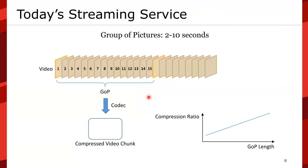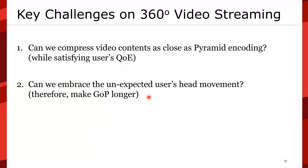Let's look at the basics of today's streaming service. Contents are created based on the GOP, group of pictures — typically two-second, five-second, or ten-second segments. With longer GOPs and codecs like H.264 or H.265, we can achieve higher compression. The key challenges for 360 video streaming are: can we compress video content as close as pyramid encoding while satisfying users' QoE? And can we embrace unexpected users' head movement, thereby making the GOP longer?